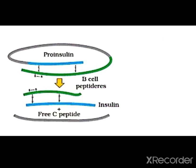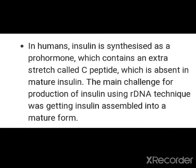You can see in the diagram that finally we get mature insulin from pro-insulin. In humans, insulin is synthesized as a pro-hormone, which contains a C peptide (C chain). But in mature insulin, the C chain is not present. So, the main challenge in rDNA technology was to produce mature insulin without the C chain.